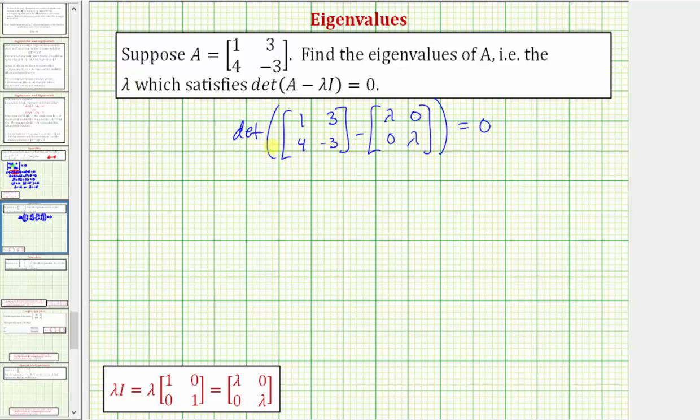Let's write this using vertical bars. The first row of the determinant is going to be one minus lambda, and then three minus zero, which is three. The second row is going to be four minus zero, or four, and negative three minus lambda.